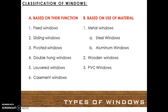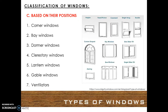Based on the use of material, windows are classified as metal windows — which include steel windows and aluminium windows — wooden windows, and PVC windows. Classification of windows based on their position includes: corner windows, bay windows, dormer windows, clerestory windows, lantern windows, gable windows, and ventilators.